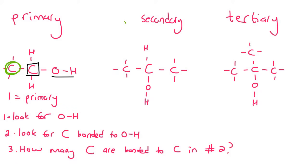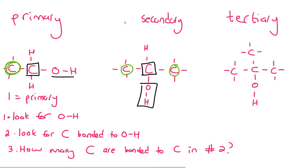Let's try the next one. We look for the OH — here it is. Then we look for the carbon that is bonded to the OH — here it is. Then we look and see how many carbons are bonded to that one. There's one and two. So because there are two, we call this secondary.